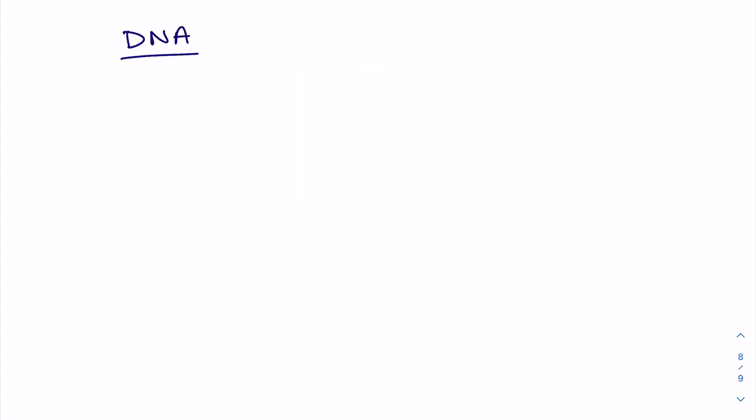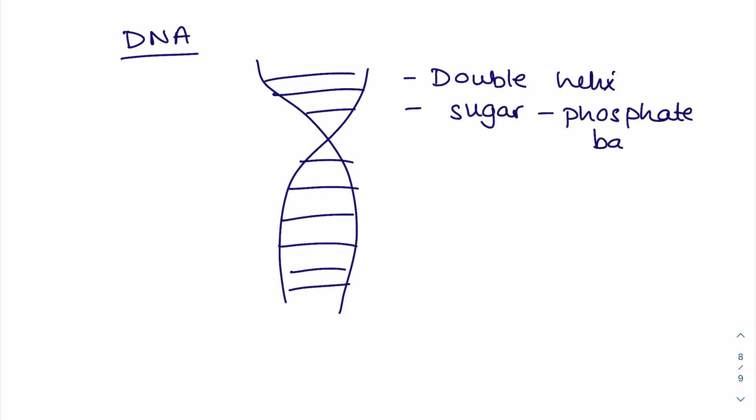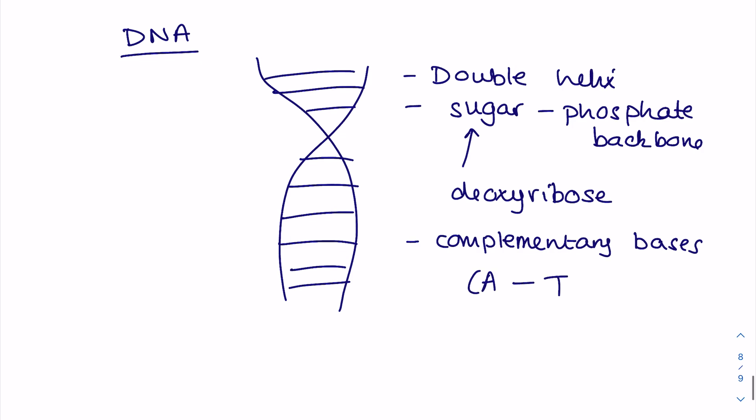Right, DNA. Now this is a very loose drawing just to show that it is a double helix, made up of a sugar phosphate backbone. Remember for me that that sugar is called deoxyribose. That's what the D in DNA stands for. And that you find complementary bases in the middle of those rungs, which are made up of A binding to T, C binding to G, and they're held together by hydrogen bonds.